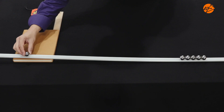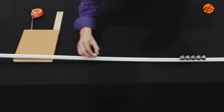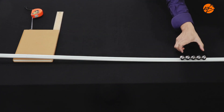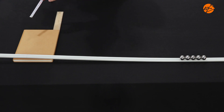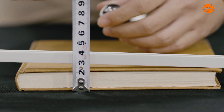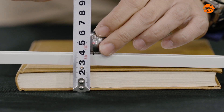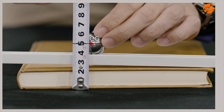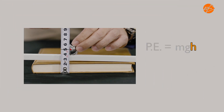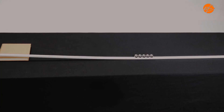I will release one ball bearing along the track towards the remaining five ball bearings in contact with each other. I will release the ball from the height of 5.0 cm. With this height, the ball bearing will have a potential energy, PE. Predict what will happen to the five ball bearings upon collision.